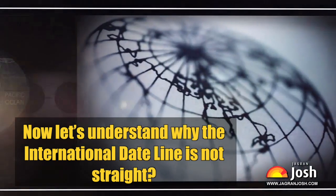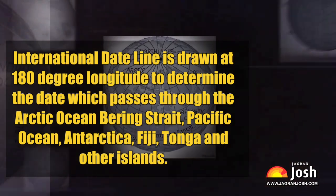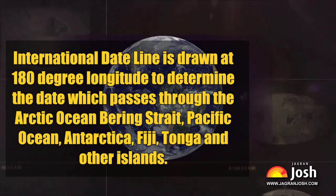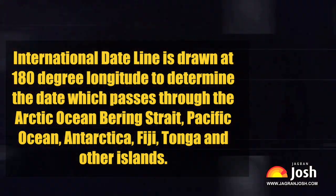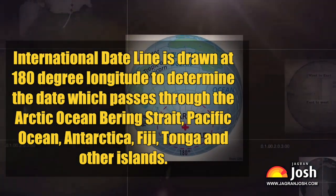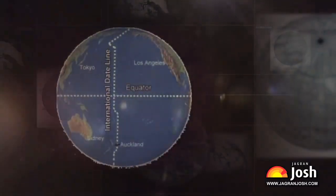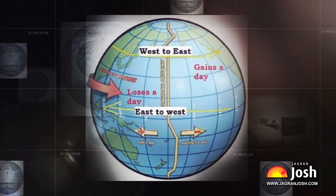Now let's understand why the international date line is not straight. The international date line is drawn at 180 degrees of longitude to determine the date, and it passes through the Arctic Ocean, Bering Strait, Pacific Ocean, Antarctica, Fiji, Tonga, and other islands. If we look at this imaginary line, we find that it is not straight but a zigzag line. Had it been a straight line, it would have demarcated the same landmass into two parts, and then both places would have different dates on the same day.